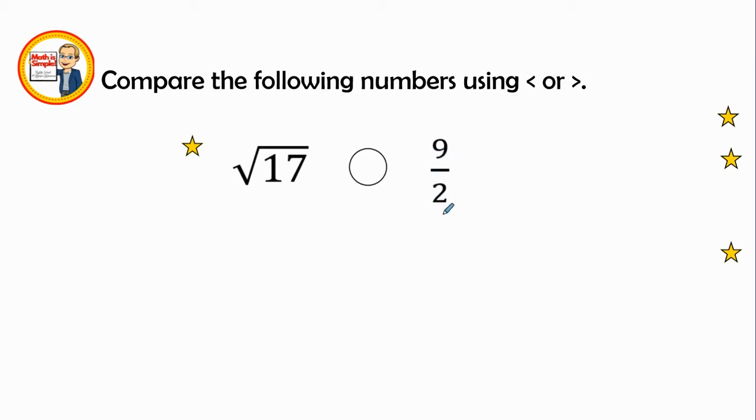Well, 9 over 2, that looks like 2 goes into 9 4 times with 1 left over. So we are going to look at 9 halves is really going to be like 4 and 1 half or 4.5 if we did it as a decimal.